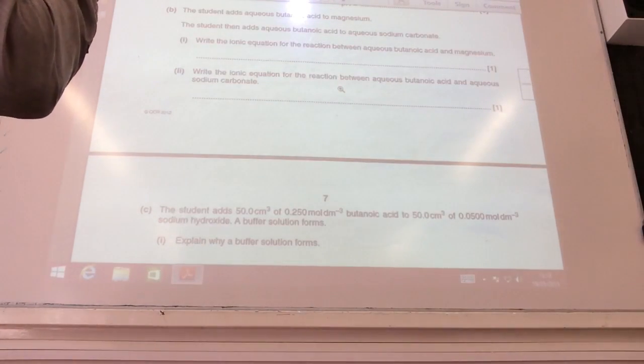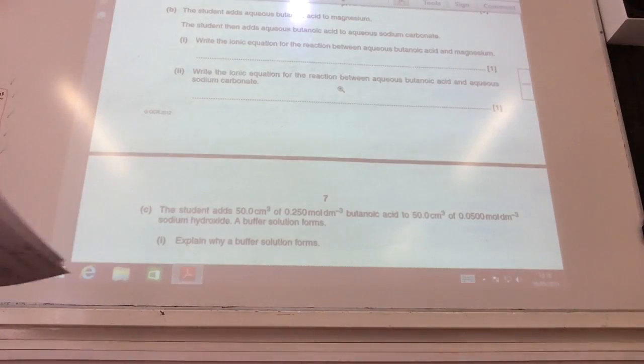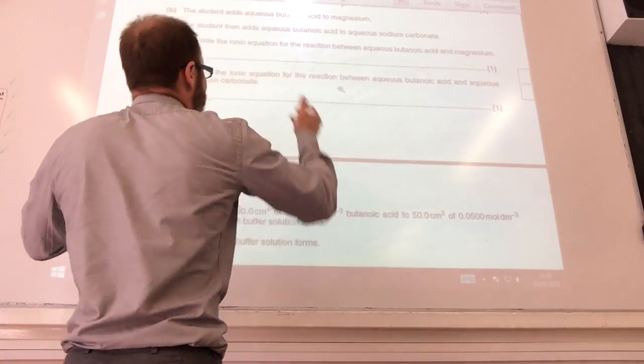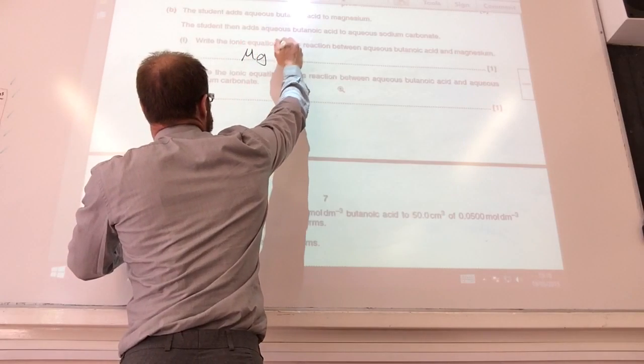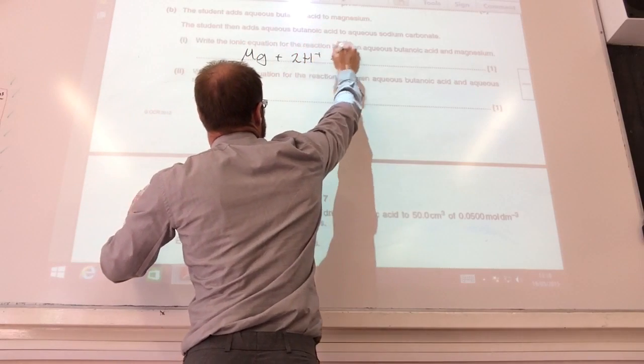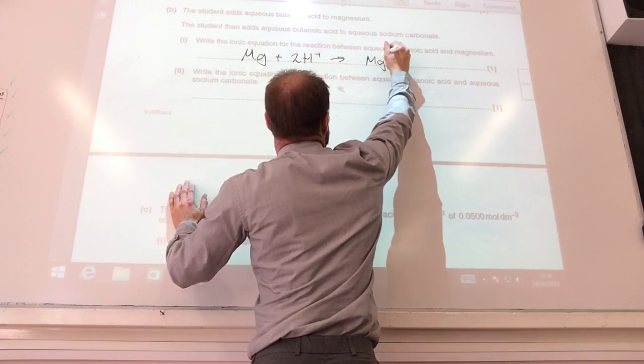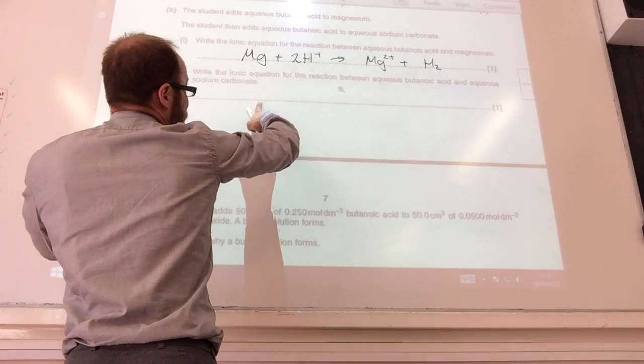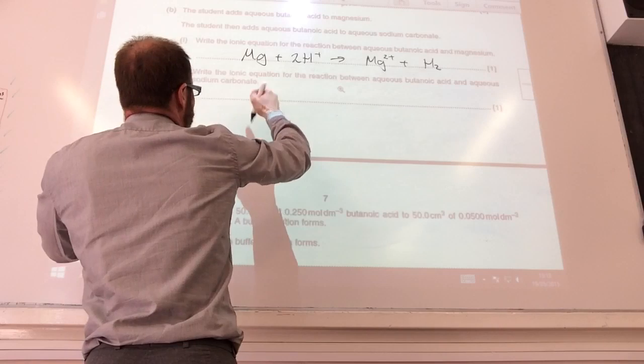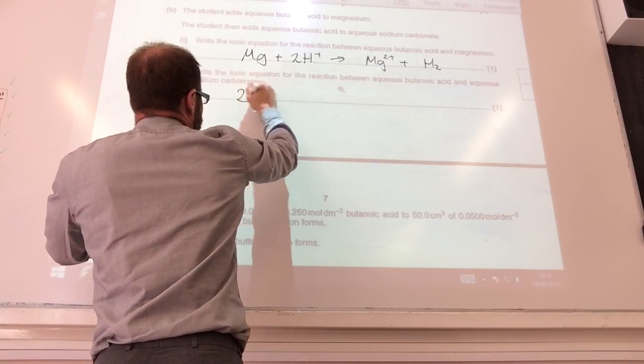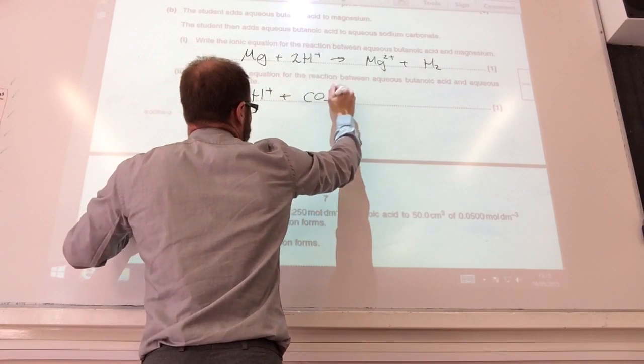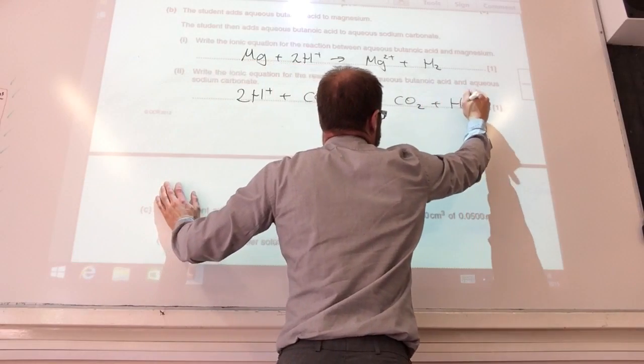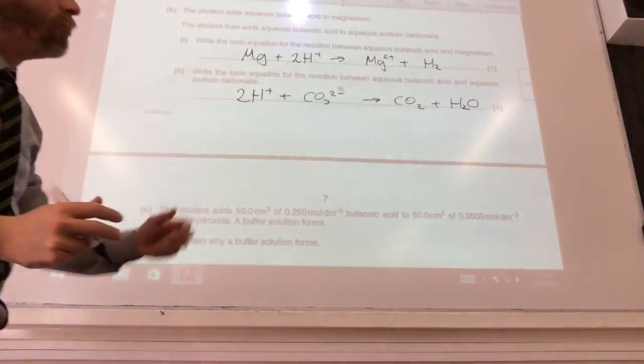Right, so for the next step, they want some ionic equations. These are actually quite straightforward. You don't need to worry about it being butanoic acid. It's the same for any acid. So magnesium plus 2H+ goes to magnesium 2+ plus hydrogen gas. The ionic equation reaction between butanoic acid and sodium carbonate is just going to be the reaction between hydrogen ions and carbonate ions to give you carbon dioxide and water. So those guys you really should know.